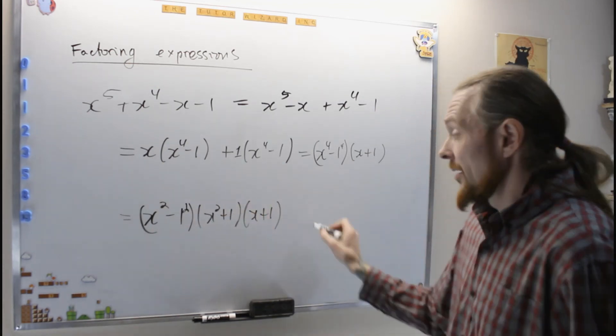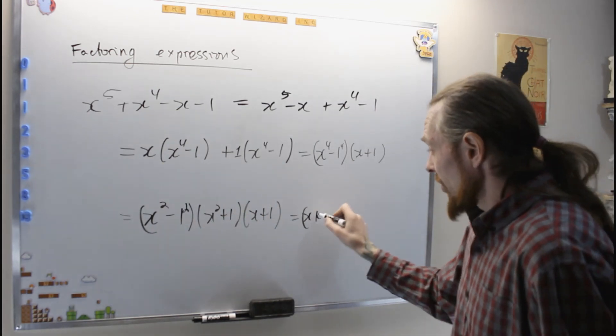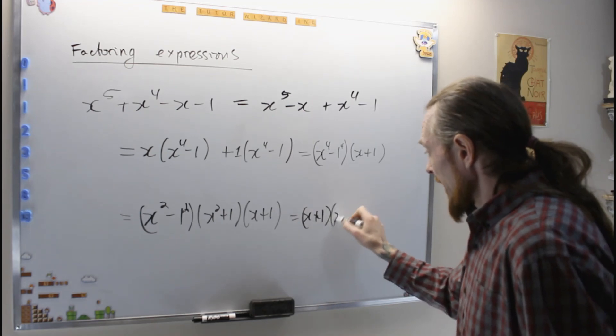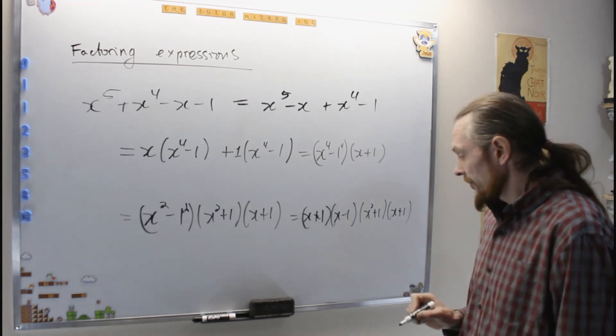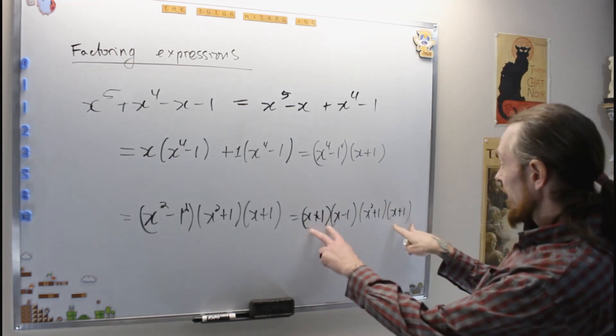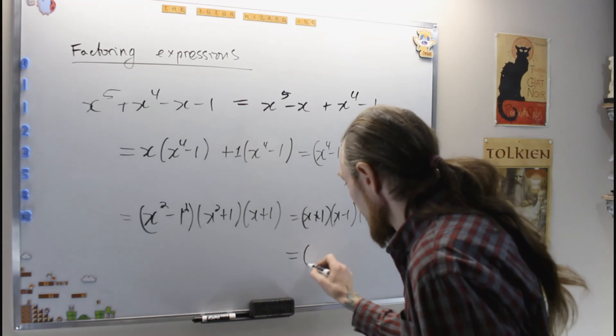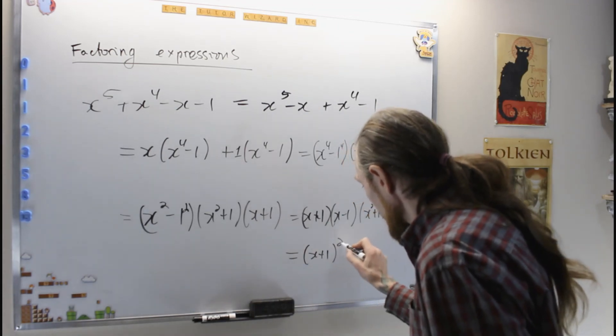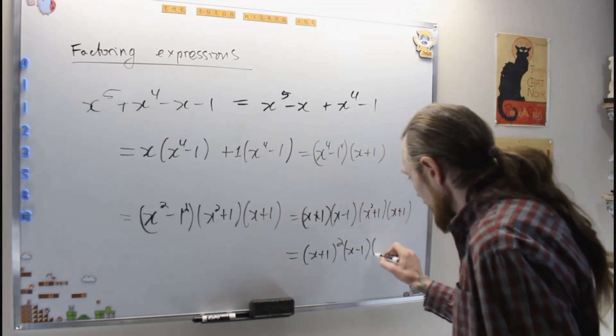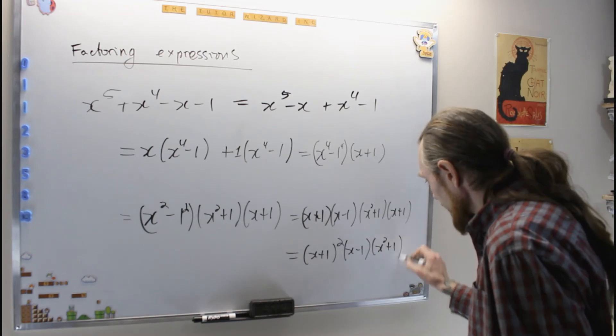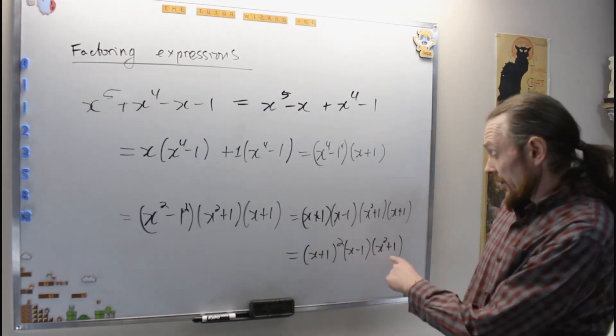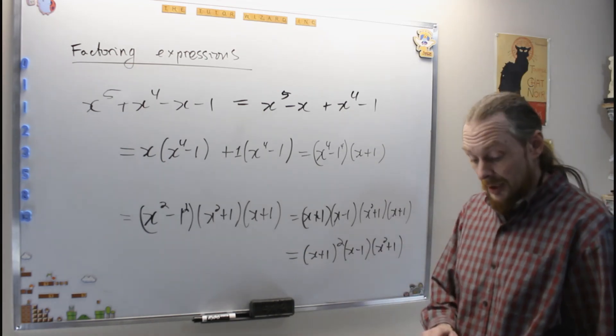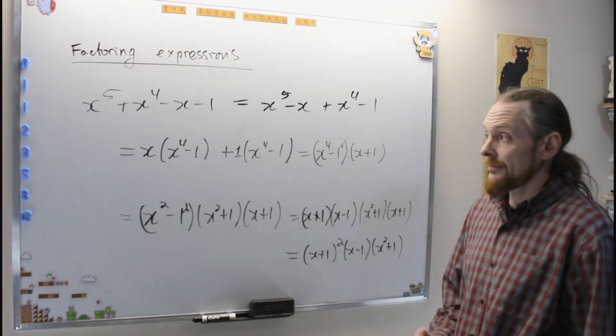1 squared. So this is x plus 1, x minus 1, x squared plus 1, x plus 1, which if we simplify that, I have two of these. So we can write this as x plus 1 squared, x minus 1, x squared plus 1, are the three linear terms and the one irreducible quadratic term completely factored.